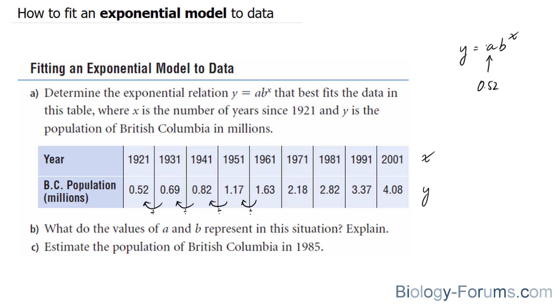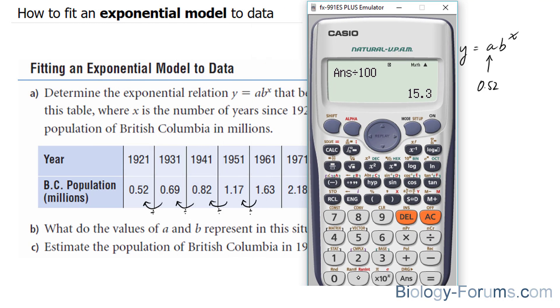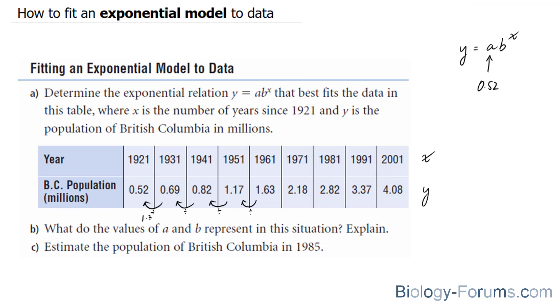So let's do that. What is 0.69 divided by 0.52? 0.69 divided by 0.52 is equal to 1.32. And we're going to do that for all of them.